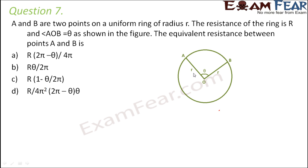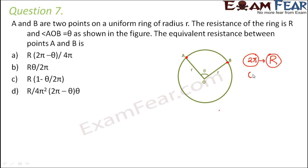Here, small r is the radius of the ring and capital R is the resistance of the overall ring. We have to find out the equivalent resistance between these two points. Capital R is the resistance corresponding to the entire ring, meaning 360 degrees or 2π. So corresponding to angle theta, the resistance would be R divided by 2π, multiplied by theta. So for this arc, the resistance is Rθ/2π.